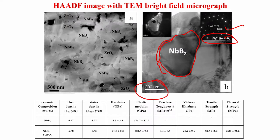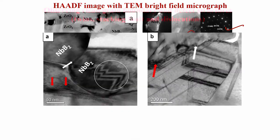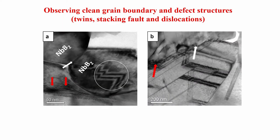In terms of different properties: niobium boride has a sintered density of 6.55 g/cm³ against a theoretical density of 6.58 — very close to full density. Hardness is 21.7 GPa, which is very high. Elastic modulus is 401.5 ± 9.1 GPa, fracture toughness is 4.4 MPa√m, tensile strength is 88.3 MPa, and flexural strength is around 600 MPa — this combination of properties is not bad.